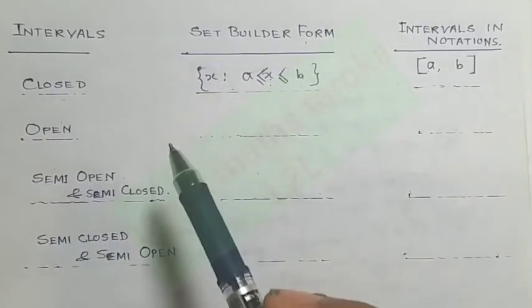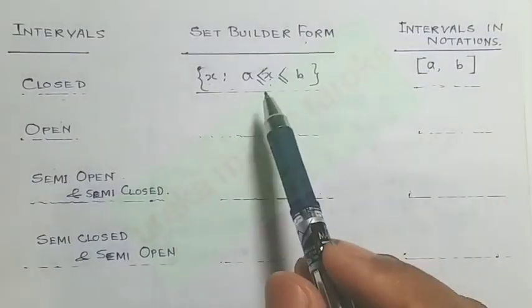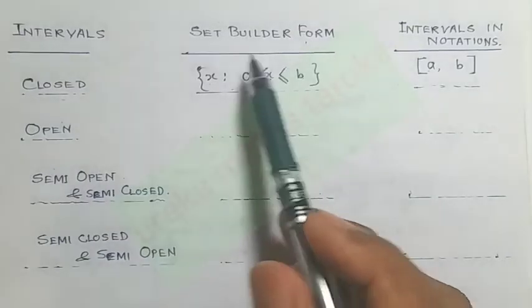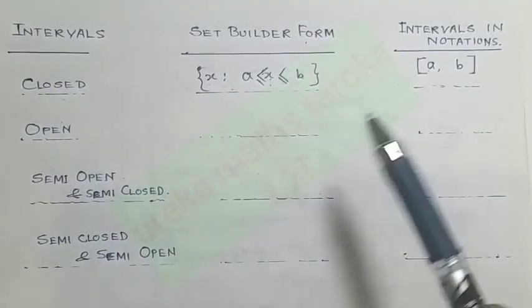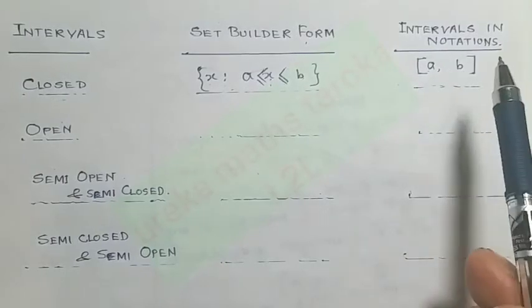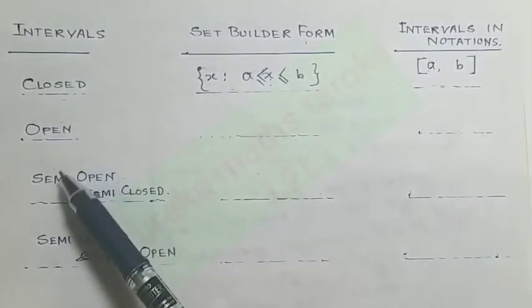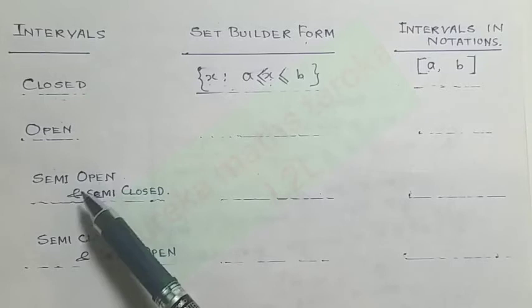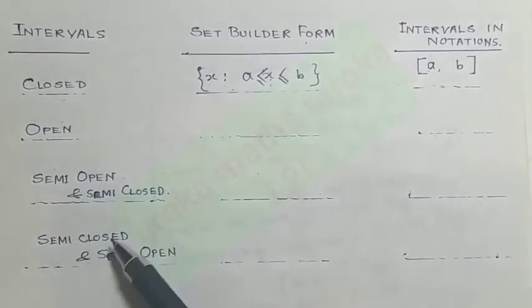Here we're going to express these intervals in set builder form. We have interval notation: closed, open, semi-open or semi-closed, and semi-closed or semi-open.